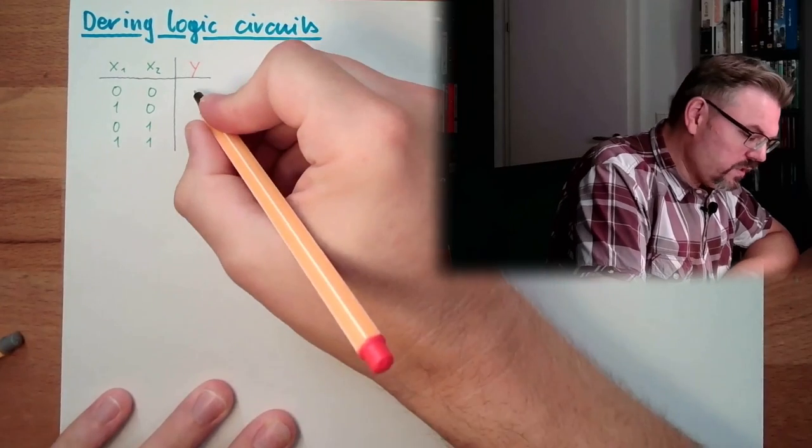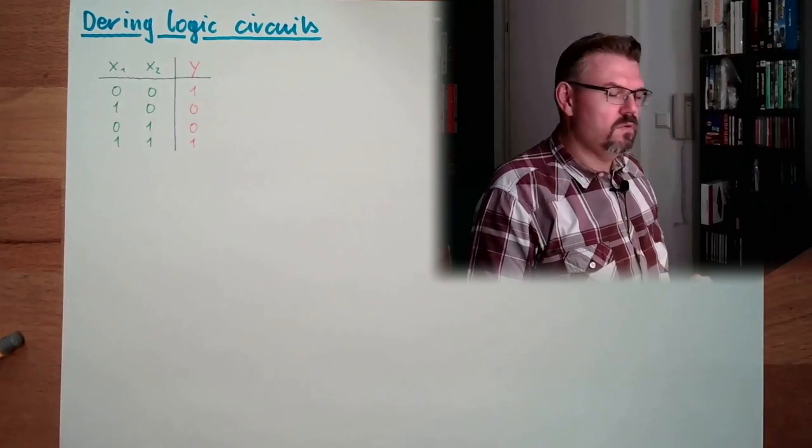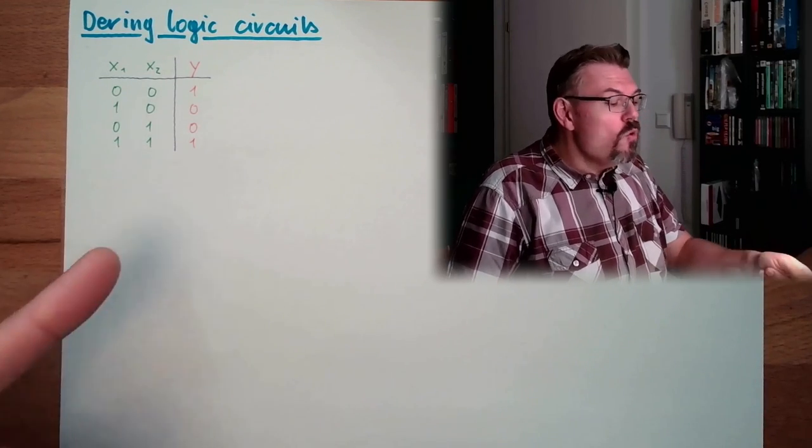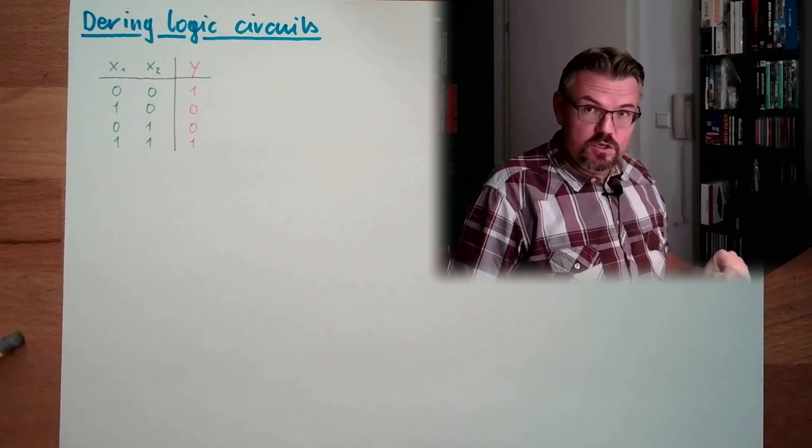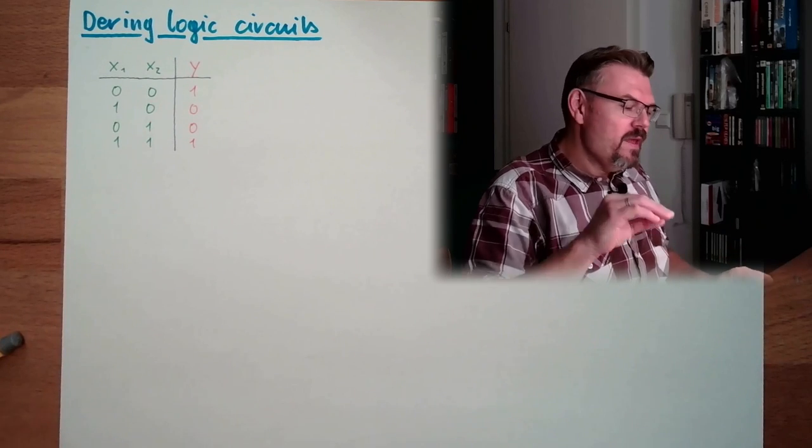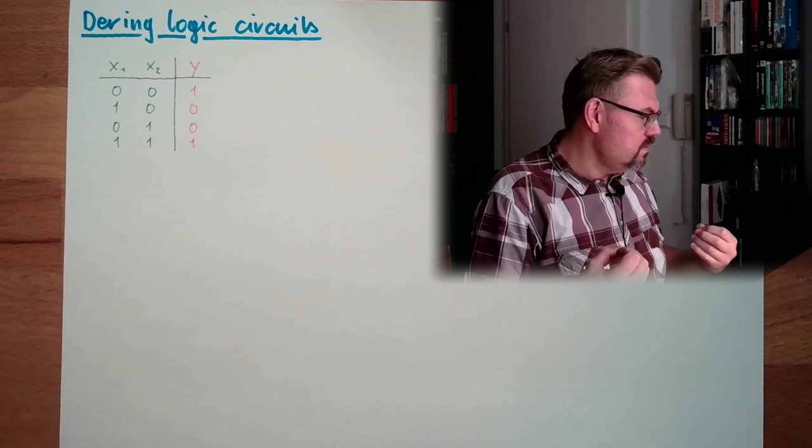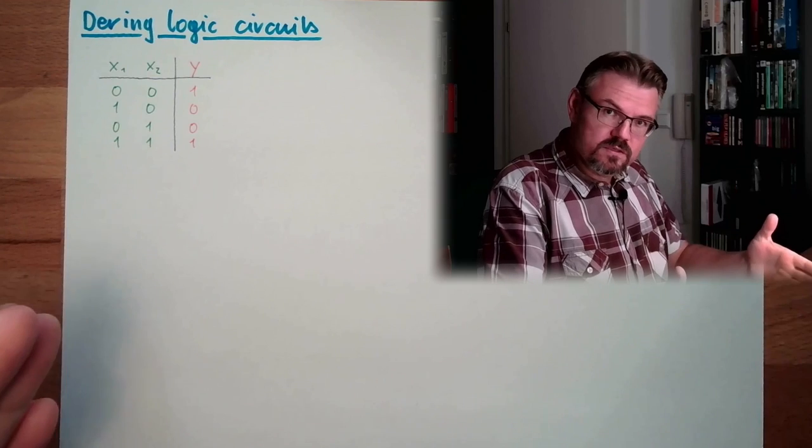Now, and here the output. Let's say we have here 1, here 0, 0, 1. This is now a table of truth showing when the output shall be true, 1, in which combination of the inputs. And how we get now to the possibility to derive logic circuits here.